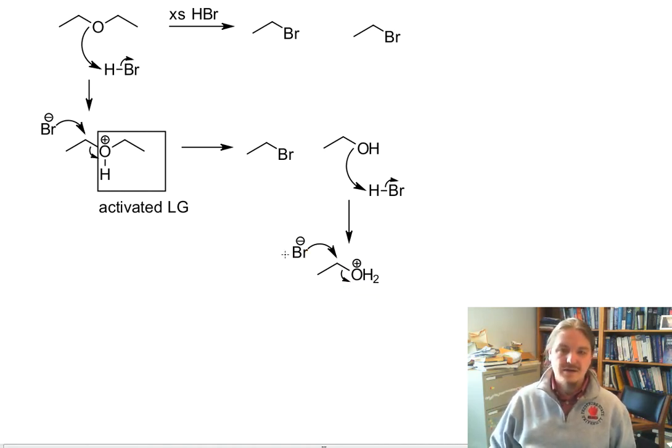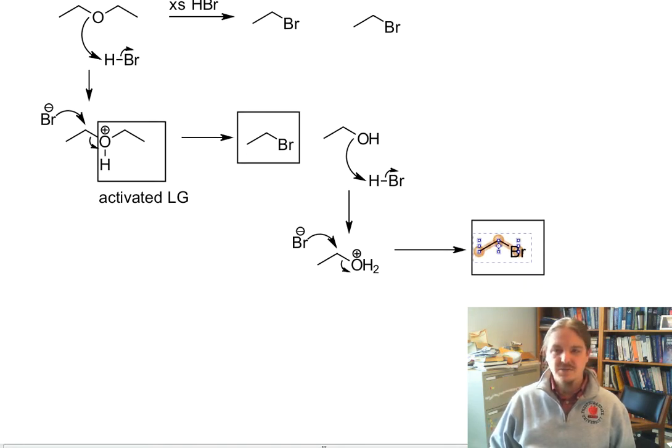And a bromide anion nucleophile that can produce the other equivalent of bromoethane. So here are my two equivalents of bromoethane formed. And we need at least two equivalents of hydrogen bromide to make this reaction work.